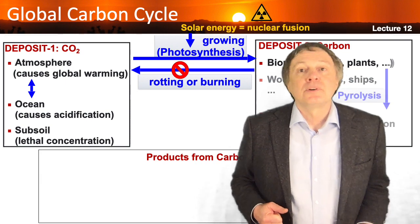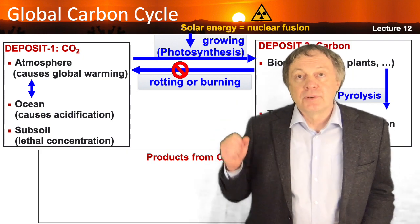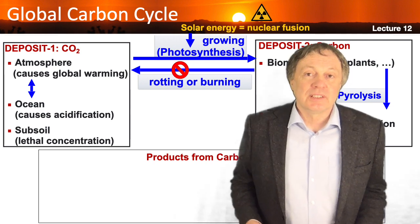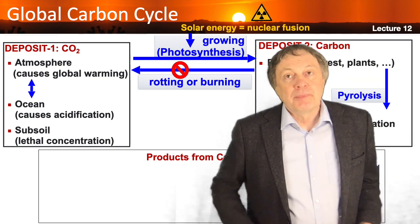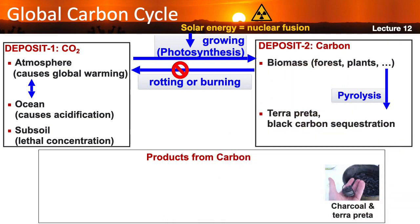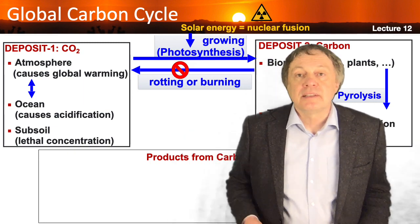Therefore we come to the next point, which to my mind is much more important for the question of global warming, and this goes with the keyword pyrolysis. Pyrolysis is one of my favorite topics — before I studied these climate problems I didn't even really know what pyrolysis is. As you remember from lecture 12, with pyrolysis you can produce black carbon. It's basically a method to produce coal or charcoal from biomass, and if you then sequestrate this black carbon, you take the CO2 out of the atmosphere.